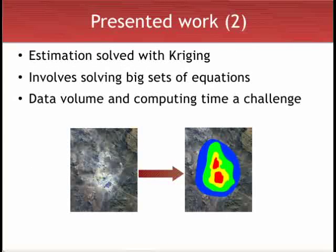The problem of estimating this sort of variable is widely solved with Kriging. Kriging corresponds to a collection of generalized regression techniques to minimize variance in estimation, defined from a prior model for covariance. Most importantly, it involves solving large sets of equations by multiplying matrices, which makes data volume and computer time become a challenge.